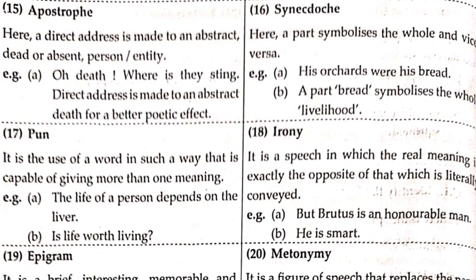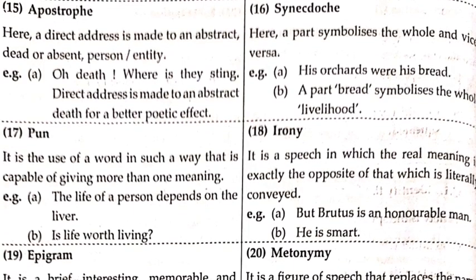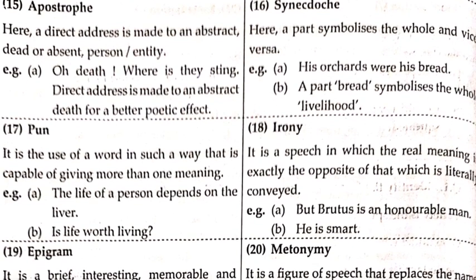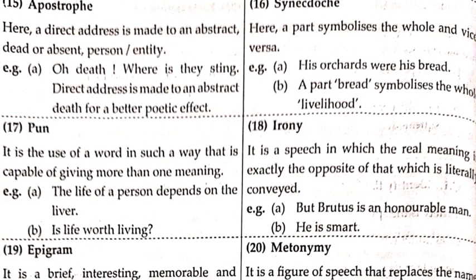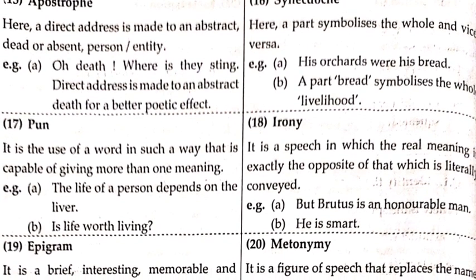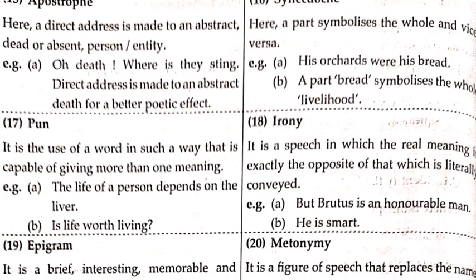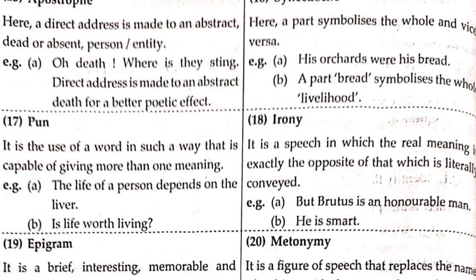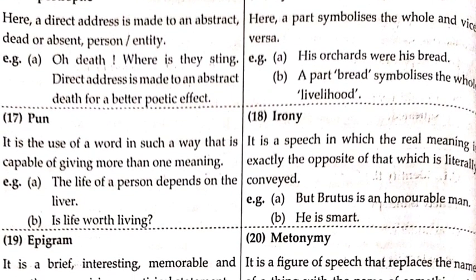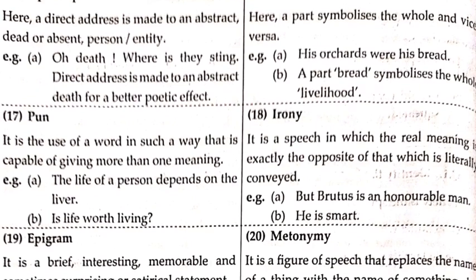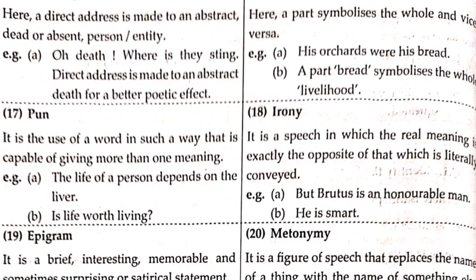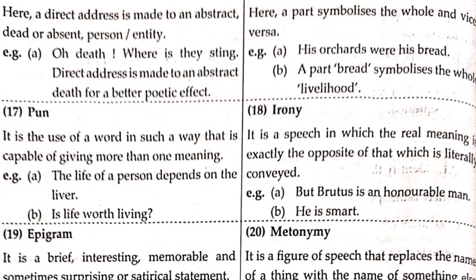Let us study about apostrophe. Here, a direct address is made to an abstract, dead, absent, or present person — i.e., an entity. Example: 'O death, where is thy sting?' A direct address is made to an abstract entity for a better poetic effect, meaning they directly convert the address to an abstract one.